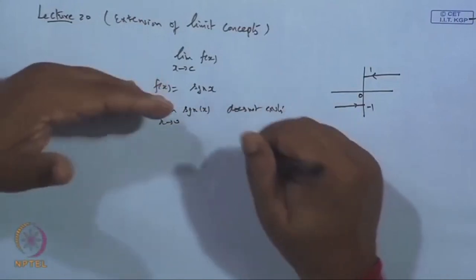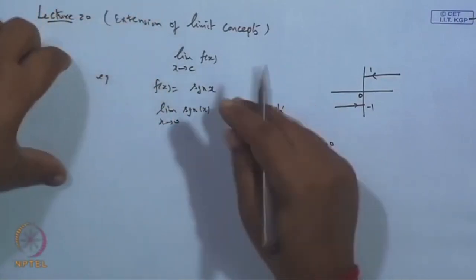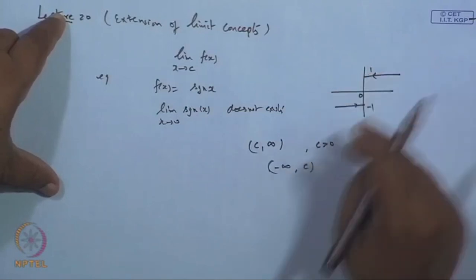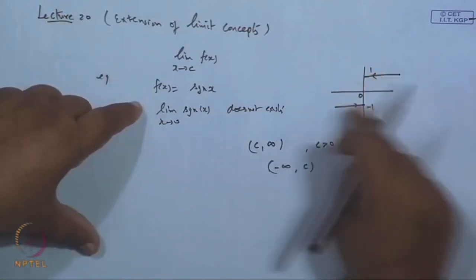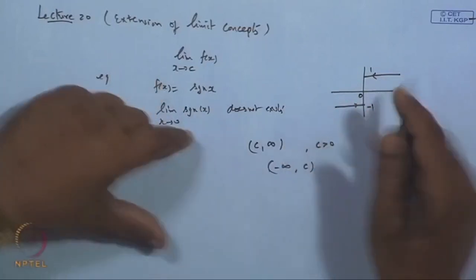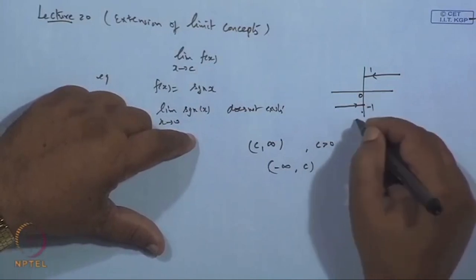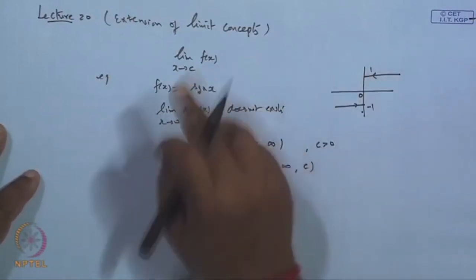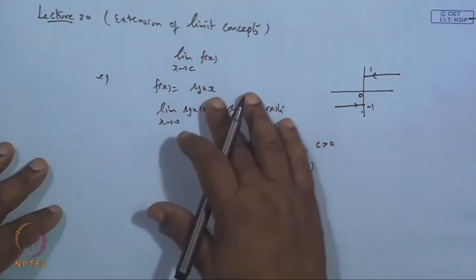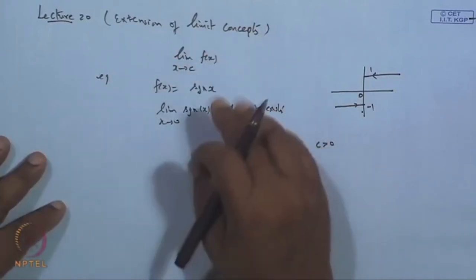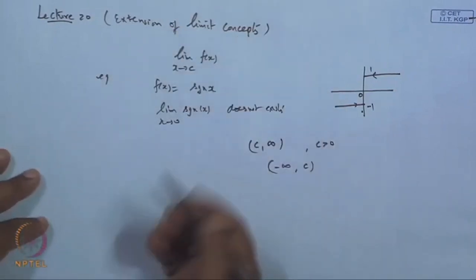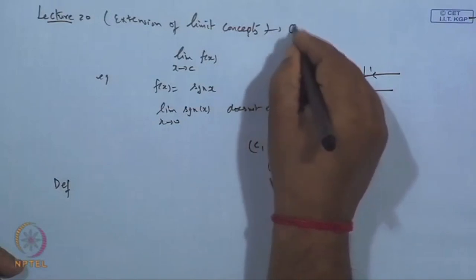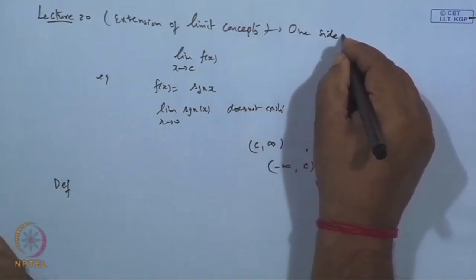In such a case, when we approach the point from the right-hand side it is called the right-hand limit, and when approaching from the left-hand side it is called the left-hand limit. If both limits coincide, we say the function has a limit in general. Otherwise, we introduce the concept of left-hand and right-hand limits, called one-sided limits — an extension of the limit concept.